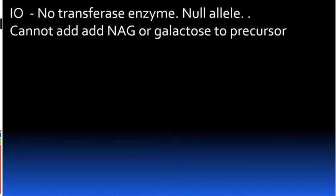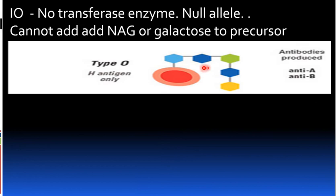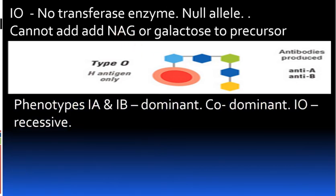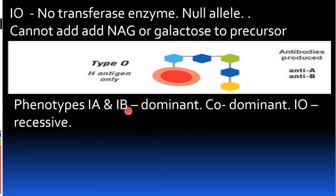IB encodes galactose transferase enzyme, which adds galactose to the precursor (N-acetylgalactosamine precursor) to produce the B antigen. The IO allele is recessive — it is the null allele and produces no functional enzyme. IA and IB are both dominant over IO.